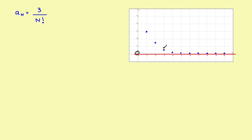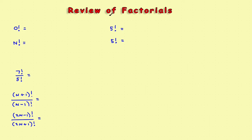Now we want to do it algebraically and see if we get the same results. Before we start, since it involves factorials, let's do a quick review. If you don't remember the factorial rules, you'll have problems with these sequences. As a reminder: 5 factorial is 5 times 4 times 3 times 2 times 1 — written in descending order from the largest number down to one.